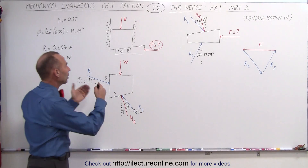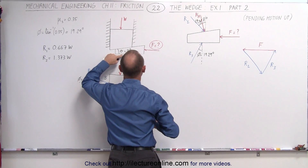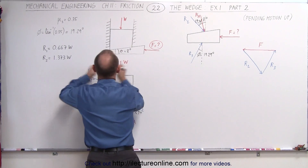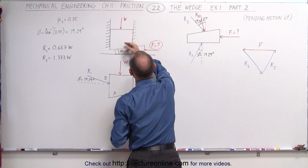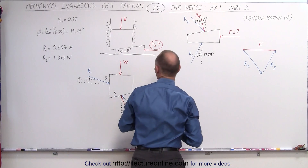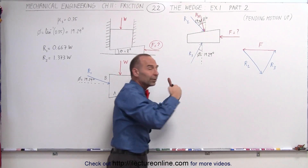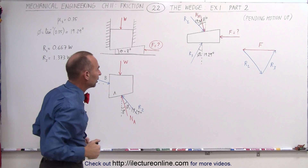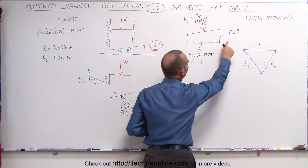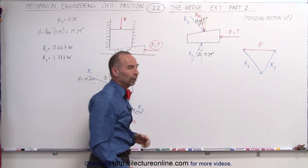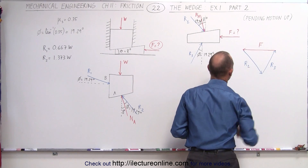Now we're looking at the wedge itself. When we look at the wedge, we have the force trying to drive the wedge in, the reactionary force at the bottom of the wedge relative to the floor — the wedge is being driven over a floor — and the reactionary force at the top of the wedge, between the block and the wedge. Note that the R2 found at the bottom of the block is the same R2 on top of the wedge; these are equal and opposite reactionary forces. We already found R2, but we don't yet know R3 or the force F. When we draw a vector sum of those three forces, of course they must add up to zero.